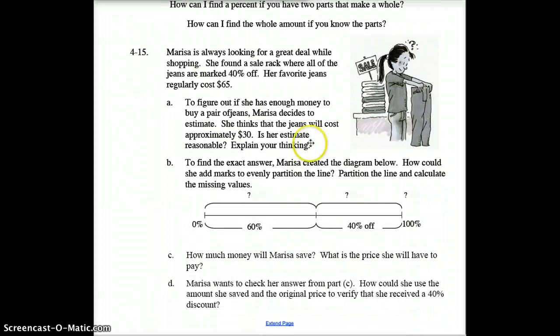Moving on down here. Question 4-15. Marissa is looking for a great deal while shopping. She found a sales rack where all the jeans are marked 40% off. Her favorite jeans regularly cost $65. So let's start right there. At regular price, that would mean 100% of the price. They regularly cost $65, so this price over here is $65. If she paid the full 100% of it, it would be $65. But she's not paying for that. She's getting a discount.